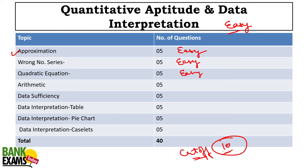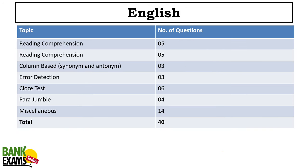In English Language: reading comprehensions came first, then column-based synonyms and antonyms, simple error detection, cloze test, para jumbles, and miscellaneous questions. If your English language skills are already good and your reading speed is fine, you should perform well.